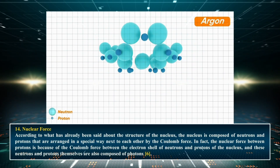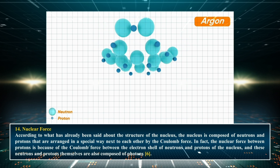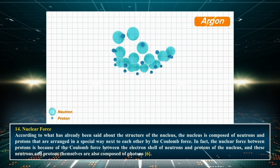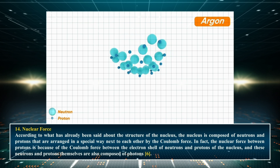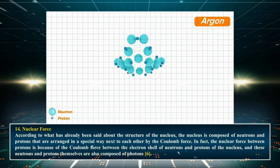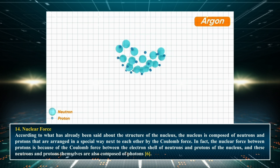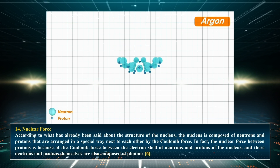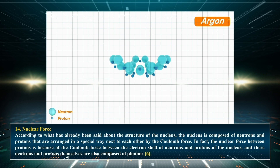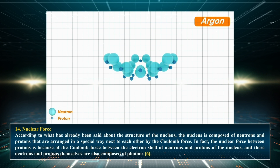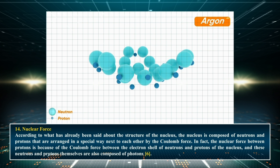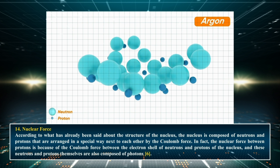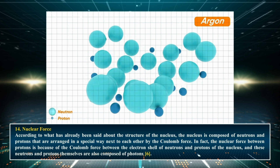Chapter 14: Nuclear Force. According to what has been said about the structure of the nucleus, the nucleus is composed of neutrons and protons arranged in a special way by the Coulomb force. The nuclear force between protons is due to the Coulomb force between the electron shell of neutrons and protons of the nucleus, and these neutrons and protons themselves are also composed of photons.